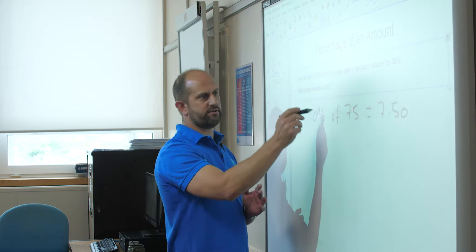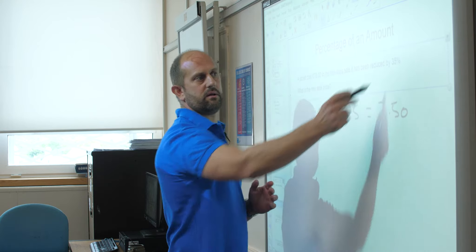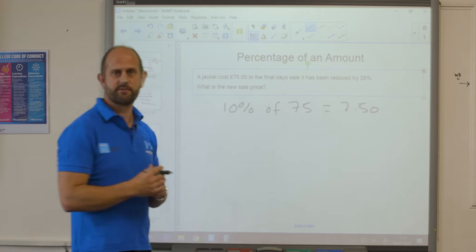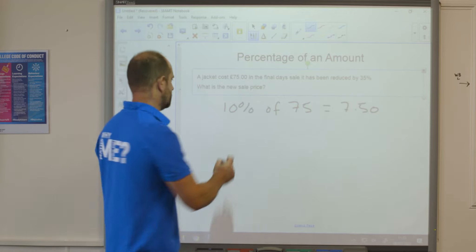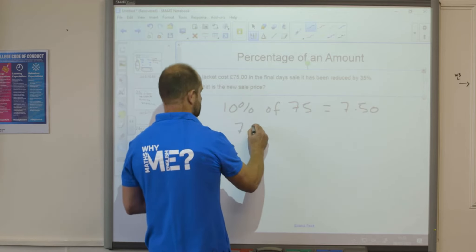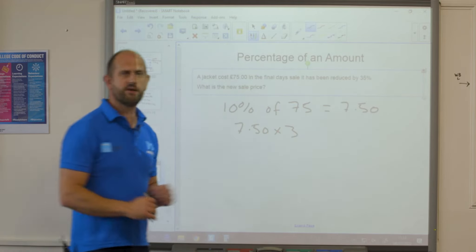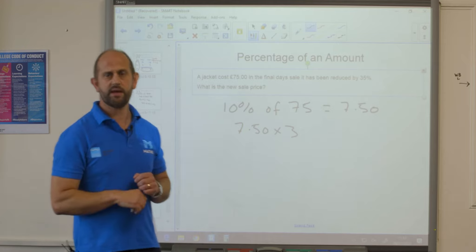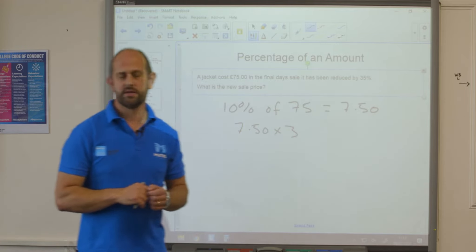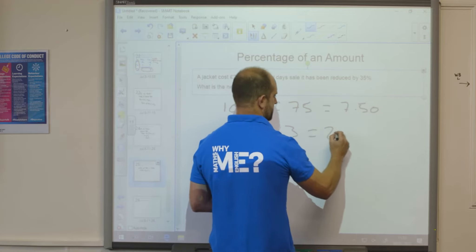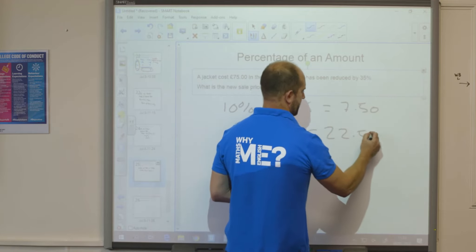So to find 30%, that part of 35%, what I'm going to do is times 7 pounds 50 by 3. So 7 pounds 50 times by 3. Well 3 times 7 is 21, 3 times 50 is 1 pound 50. So 21 and 1 pound 50, that gives me 22 pounds 50.